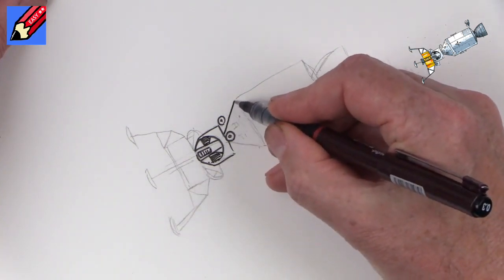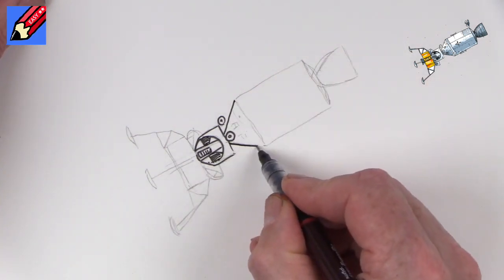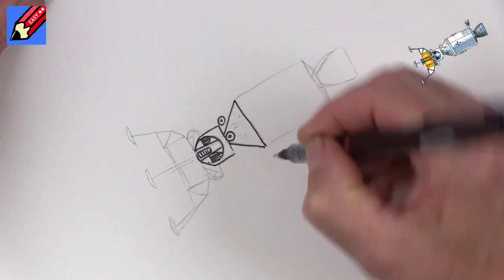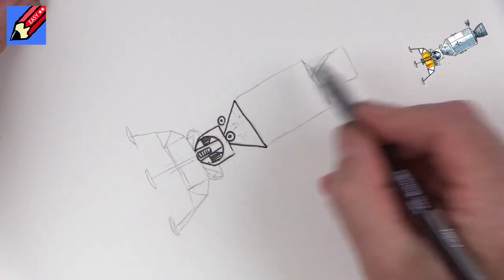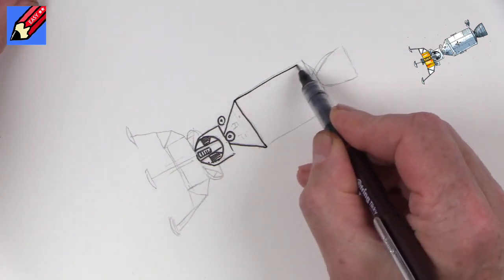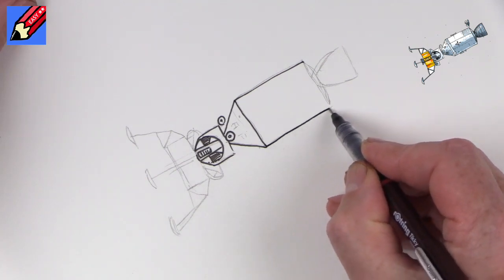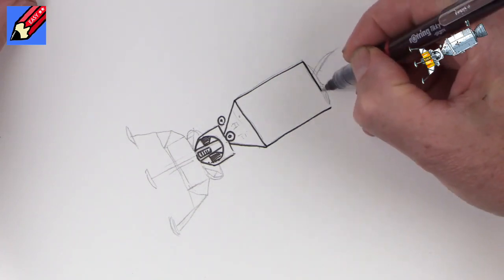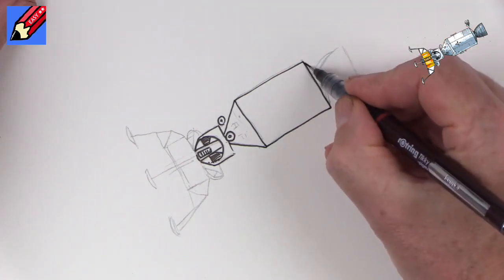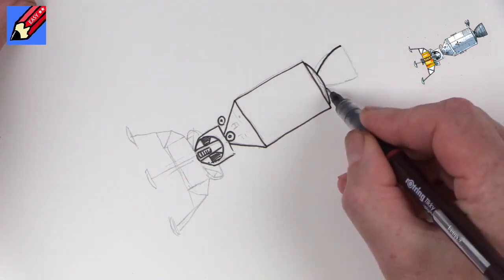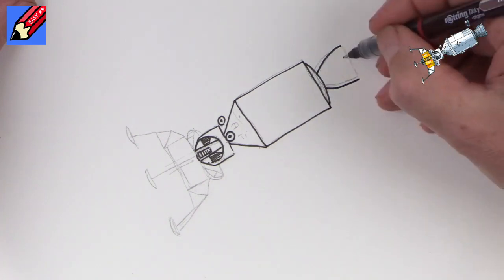And then let's draw the command module. So this is where the command module pilot sits all on his own, flying around the moon, as the two other guys climb in there and descend down to the moon on their own and leave him all on his own just flying around. Must be a very, very lonely feeling out there in space all on your own.